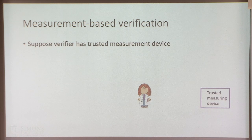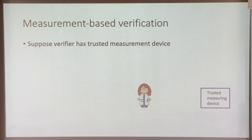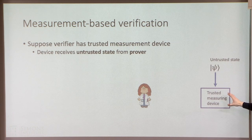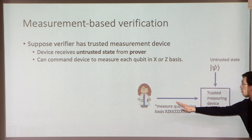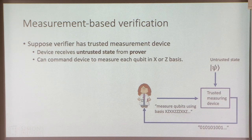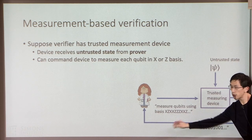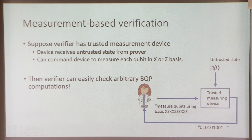Let's think about an easier semi-classical setting first. Imagine our verifier has a trusted measurement device — a device that can receive quantum states and perform single-qubit measurements in either the X or Z basis on each qubit. The verifier trusts this device to measure properly and report measurement outcomes. This simple device — just making single-qubit measurements — is actually enough for the verifier to check arbitrary BQP computations.